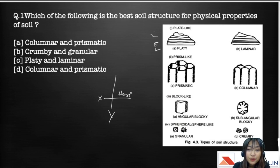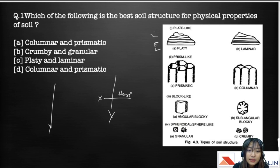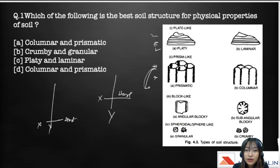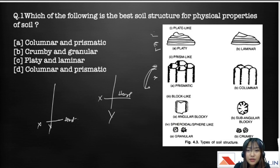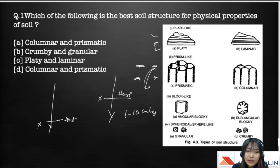Moving to prism-like, which is the opposite of plate-like — the vertical dimension is larger than the horizontal, creating a prism-like image. Under this we have two types: prismatic and columnar. In prismatic the surface is flat and can be sharper, whereas in columnar it is mostly rounded. The length is about 1 to 10 centimeters and they are usually found in arid or semi-arid areas.